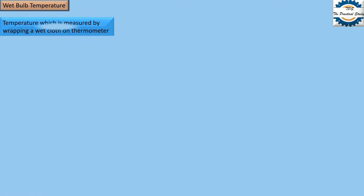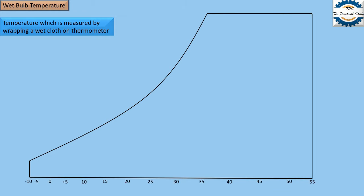Wet bulb temperature is the temperature measured by wrapping a wet cloth on a thermometer. We have already made a video on this topic. On the psychrometric chart, the wet bulb temperature lines are inclined at an angle of around 25 to 30 degrees, and the wet bulb measurement scale is shown along the saturation curve.